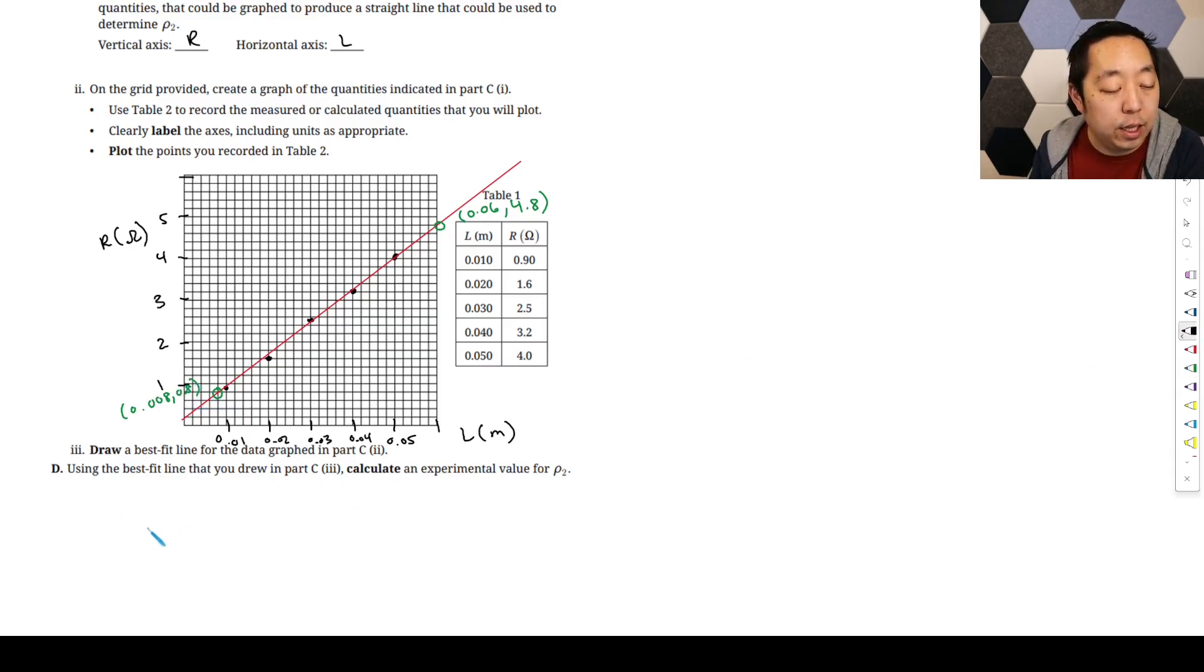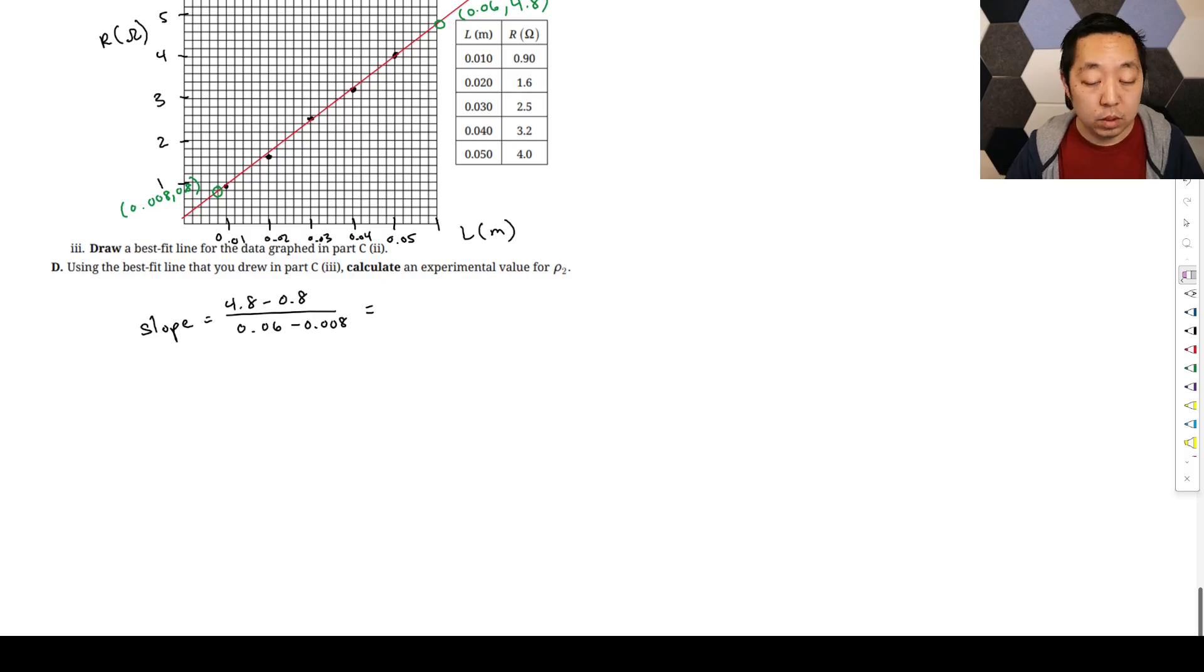Then I pick far away points to reduce the error in reading off the graph. This point here is going to be 0.06 and the Y value is 4.8. Pick something down here, say 0.008, and the Y value is 0.8. Now we're going to calculate the slope: 4.8 minus 0.8 divided by 0.06 minus 0.008. When I do that I get about 76.9. That equals ρ₂ divided by the area, which is ρ₂ divided by 5 times 10⁻⁶.